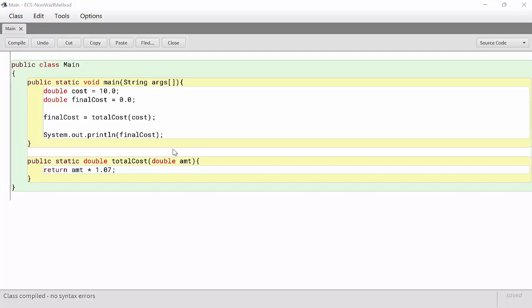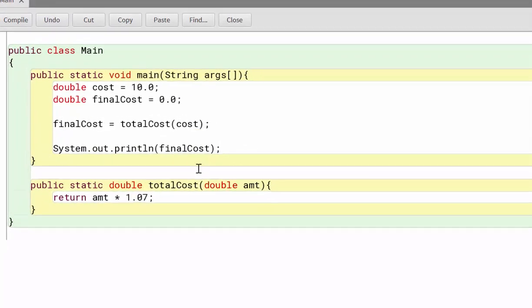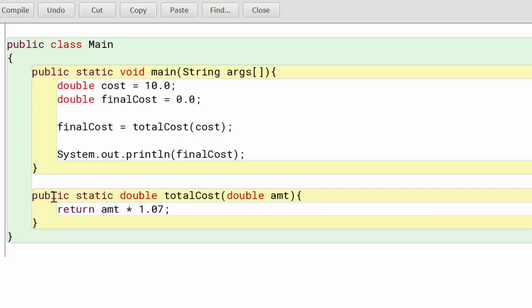In this video, we're going to take a close look at code for non-void methods. We're going to be breaking down what this public static double totalCost, this parameter, this return statement means, breaking it down so you can understand it.